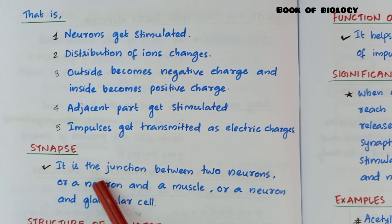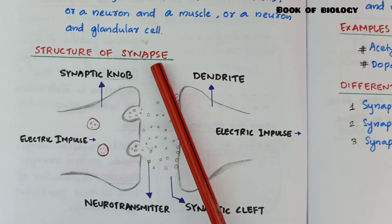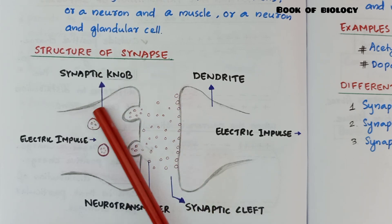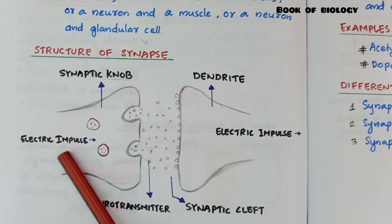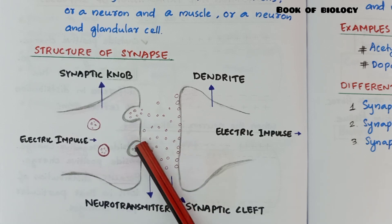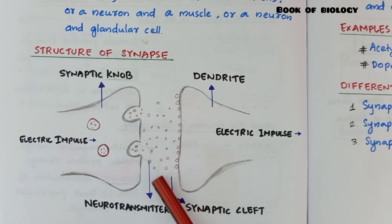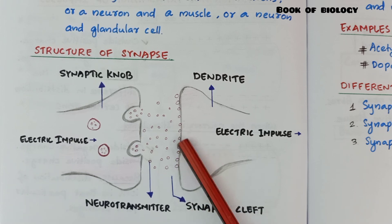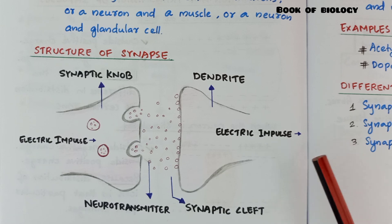Next topic: synapse. It is the junction between two neurons, or a neuron and a muscle, or a neuron and a glandular cell. Structure of synapse: the synaptic knob of the first neuron and the dendrite of the second neuron are separated by a gap. Electric impulses arrive and vesicles break, releasing chemicals called neurotransmitters. These move through the synaptic cleft and attach to the dendrite of the next neuron, continuing as an electric impulse.